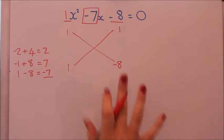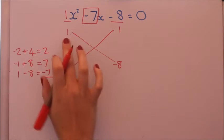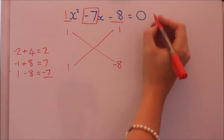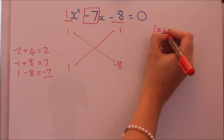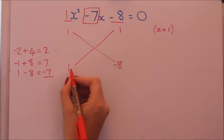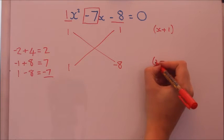So these are the correct numbers now and you can read across to get the brackets. So we've got one x plus one, that's the first bracket, and one x minus eight in the second bracket.